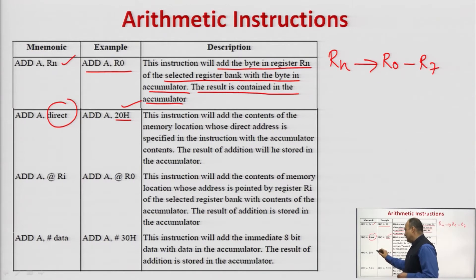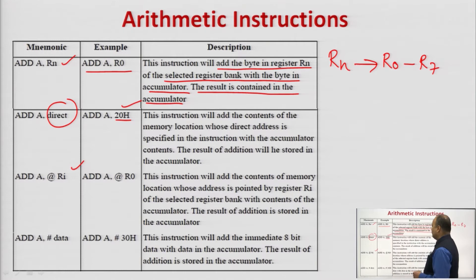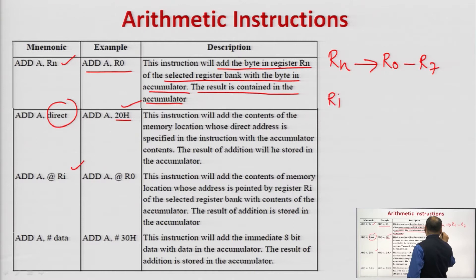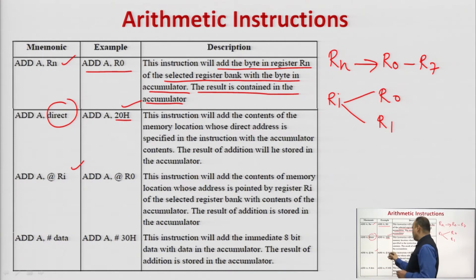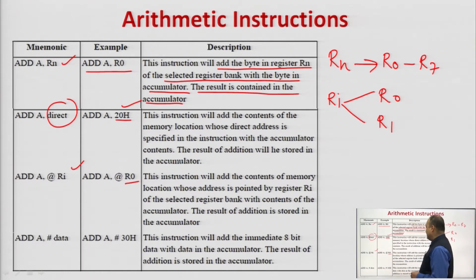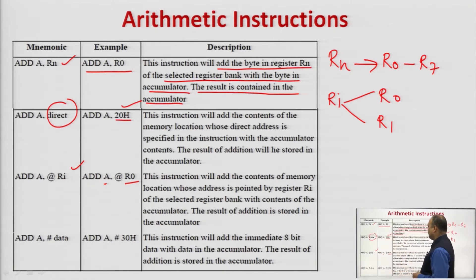Next is ADD A, @Ri. The '@' sign indicates that this instruction uses indirect addressing mode. In place of Ri, we can use only R0 or R1 of any selected register bank. The content of the memory location whose address is indirectly specified by register R0 is added with the content of the accumulator, and the result is stored back into the accumulator.